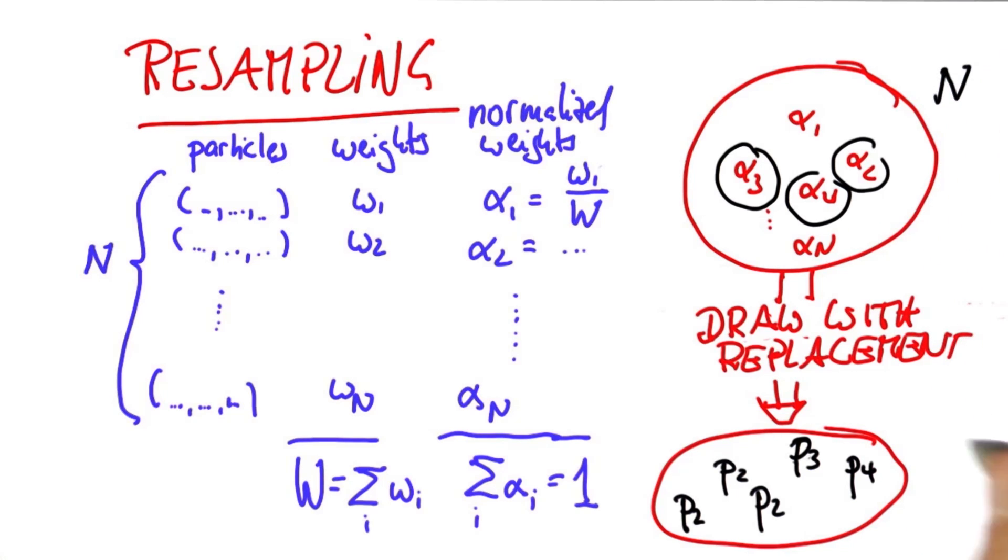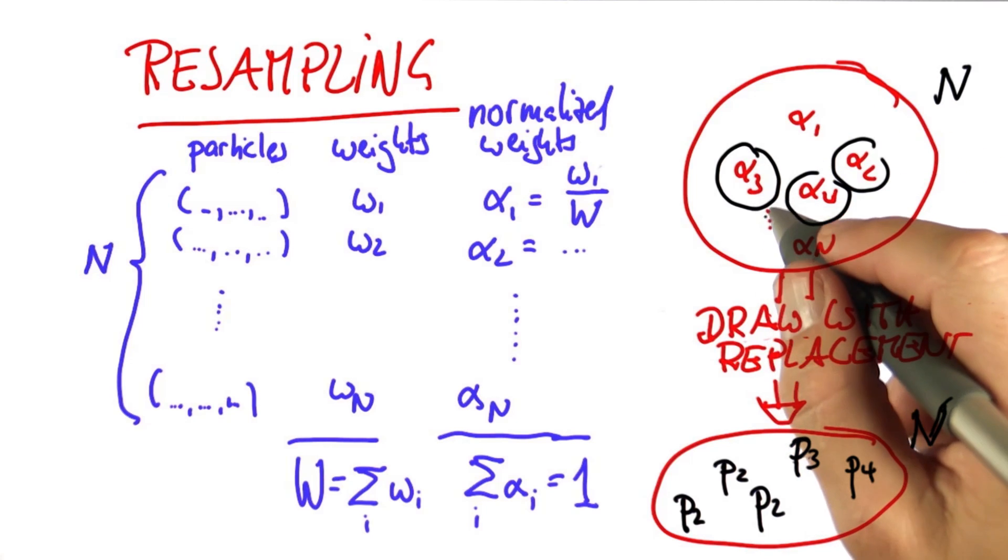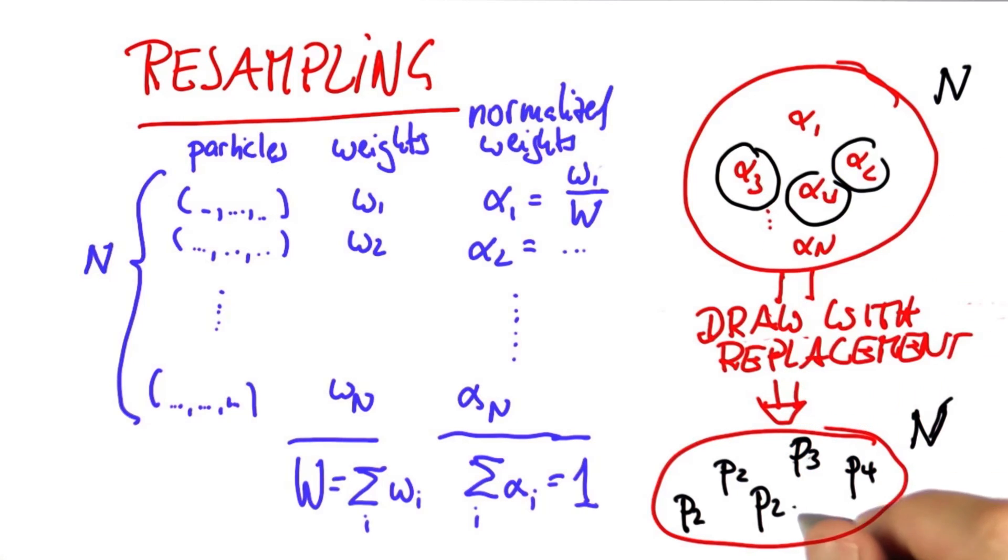We have n particles over here. We do this thing n times, which is what I said with replacement. We can draw multiple copies of the same particle. And in the end, those particles that have a high normalized weight alpha over here will occur likely more frequently in the new set over here. That's called resampling.